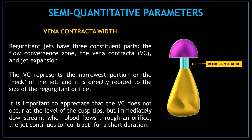That's it for the qualitative parameters. Now let's start with the semi-quantitative parameters for the assessment of aortic regurgitation. Our first parameter is the vena contracta width. Regurgitant jets have three constituent parts: the flow convergence zone, the vena contracta, and the jet expansion. The vena contracta represents the narrowest portion or the neck of the jet, and it is directly related to the size of the regurgitant orifice. It is important to appreciate that the vena contracta does not occur at the level of the cusp tips but immediately downstream, because when blood flows through an orifice the jet continues to contract for a short duration.